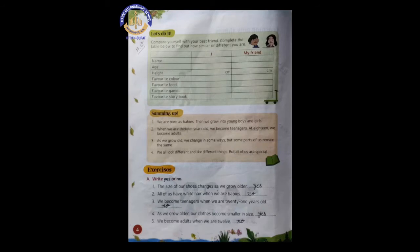There is name, age, height, favorite color, favorite food, favorite game and favorite storybook. So this is homework for you because I don't know about your friend so you need to write that, okay? Now below that there is an exercise.